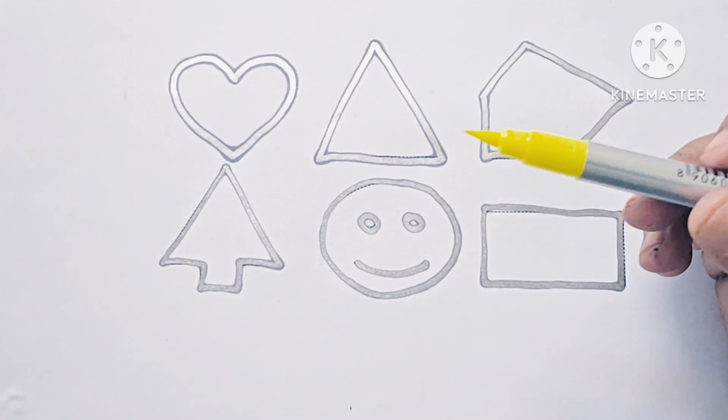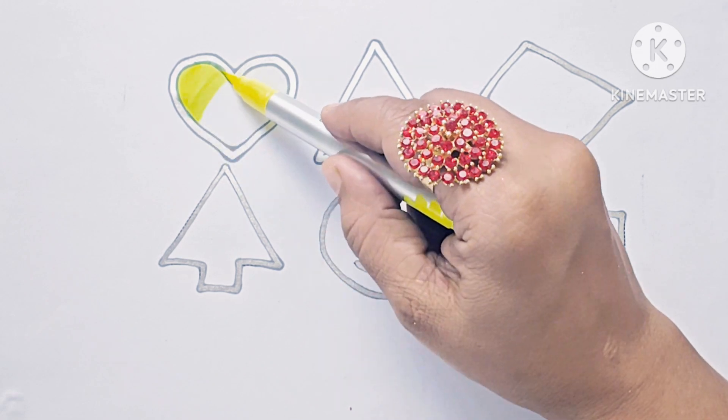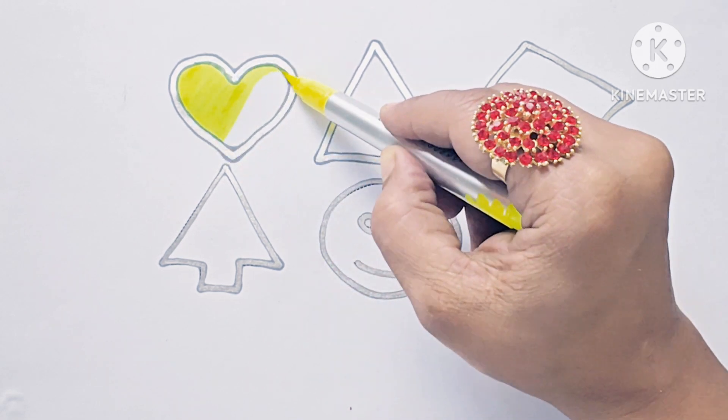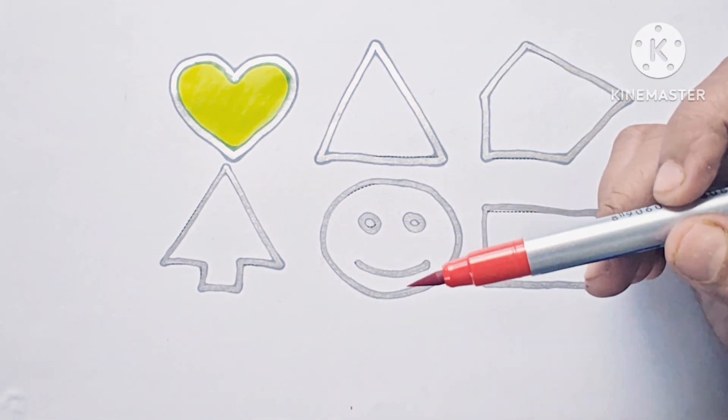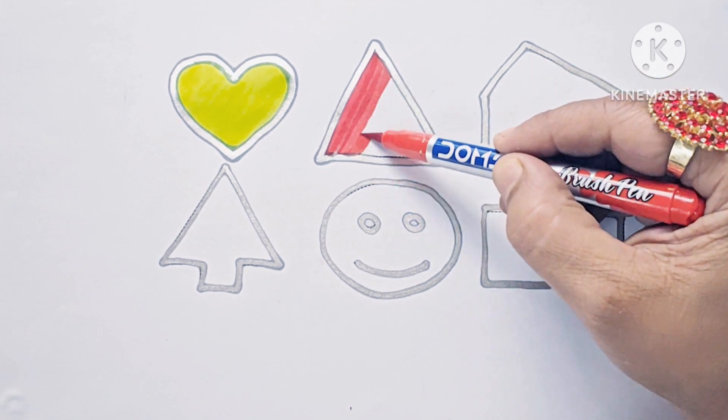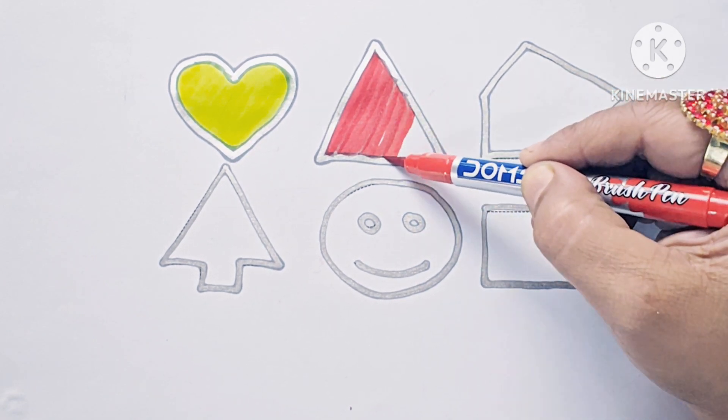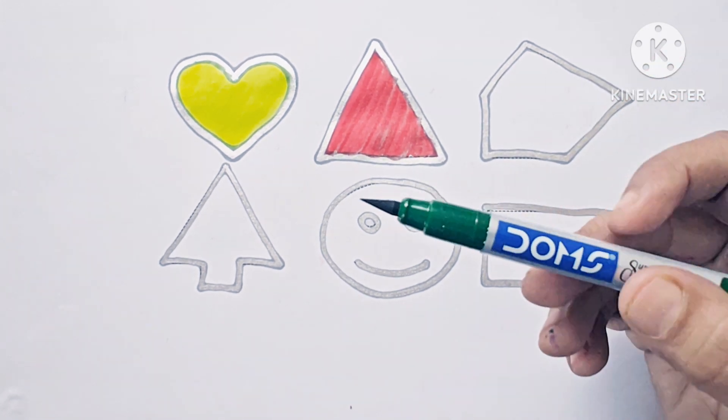Let us color the shapes. Fluorescent yellow heart, red color, green color.